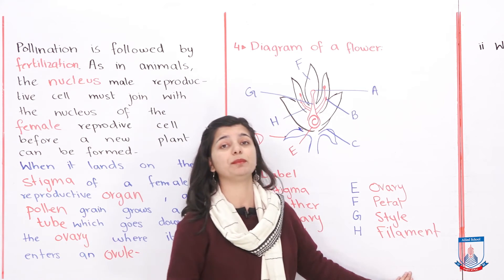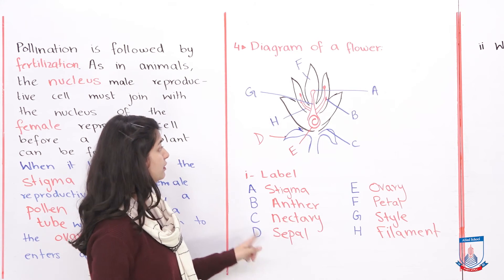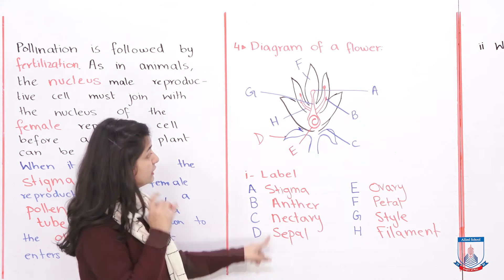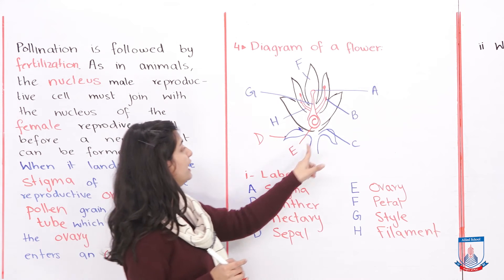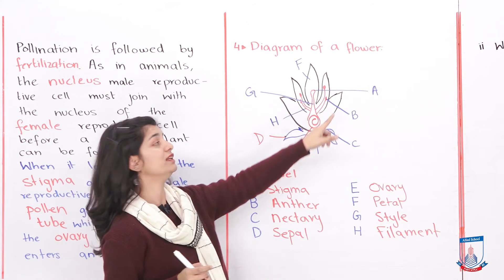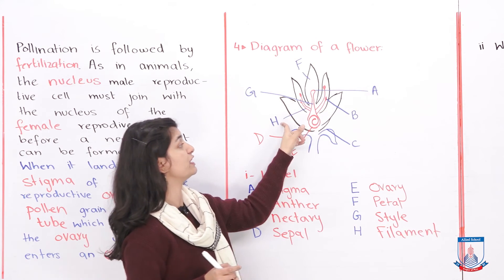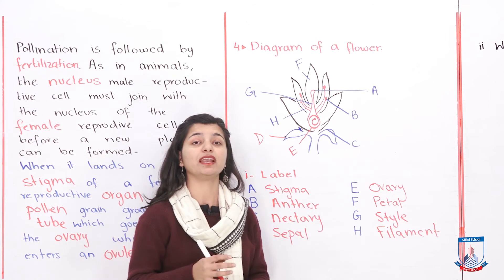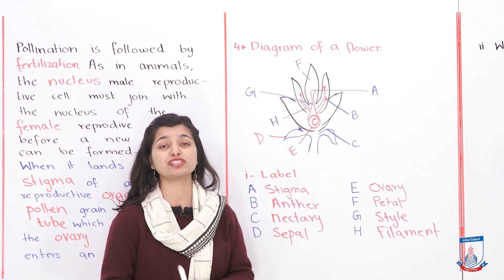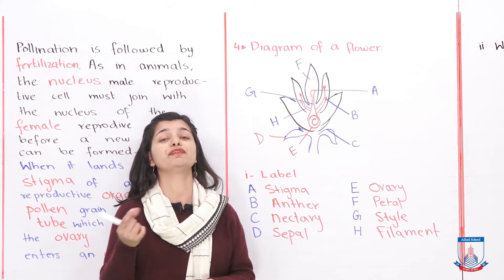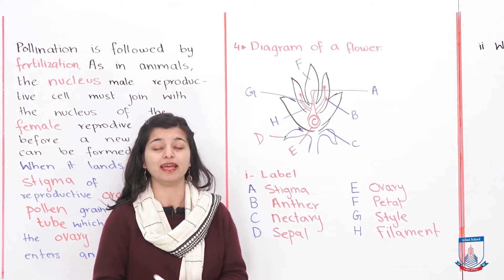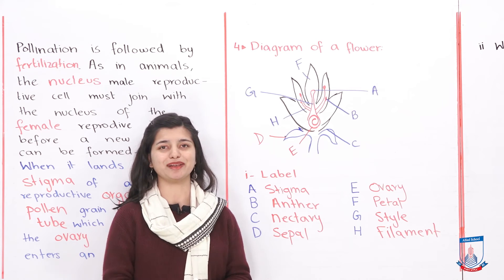So we have all labels A to H: A is stigma, B is anther, C is nectary, D is sepal, E is ovary, F is petal, G is style, and H is filament. Now they have asked some questions about specific organs and their functions, so let's answer those as well.